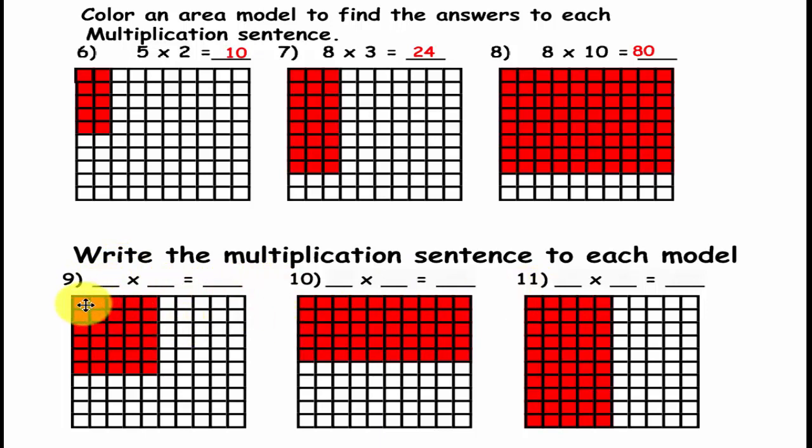Now, we have how many rows here, 1, 2, 3, 4, 5, 6, and how many columns, 1, 2, 3, 4, 5. So we should have 6 times 5 is equal to 30.